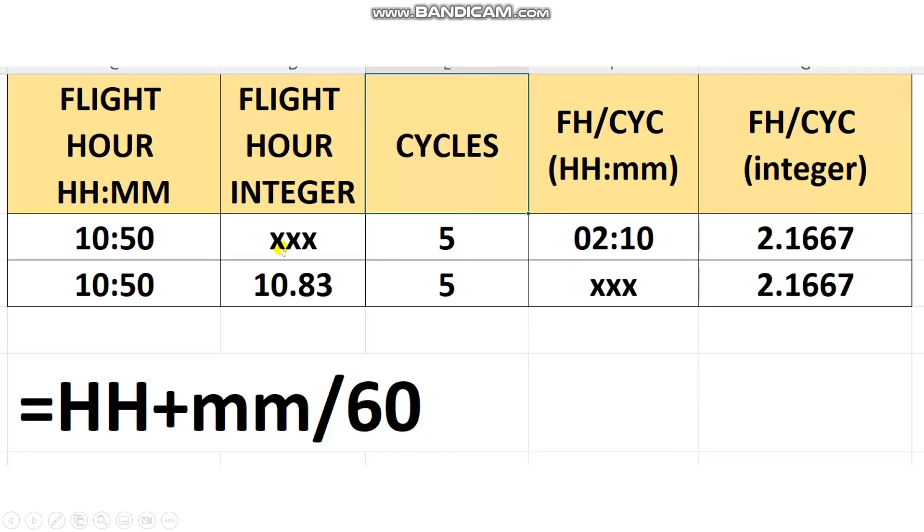Another way here. This is the daily utilization or the flight hours during the day. I change it to decimal here. So, 10 plus 50 over 60. This figure divided by the five cycles. This is the result. The same result here.